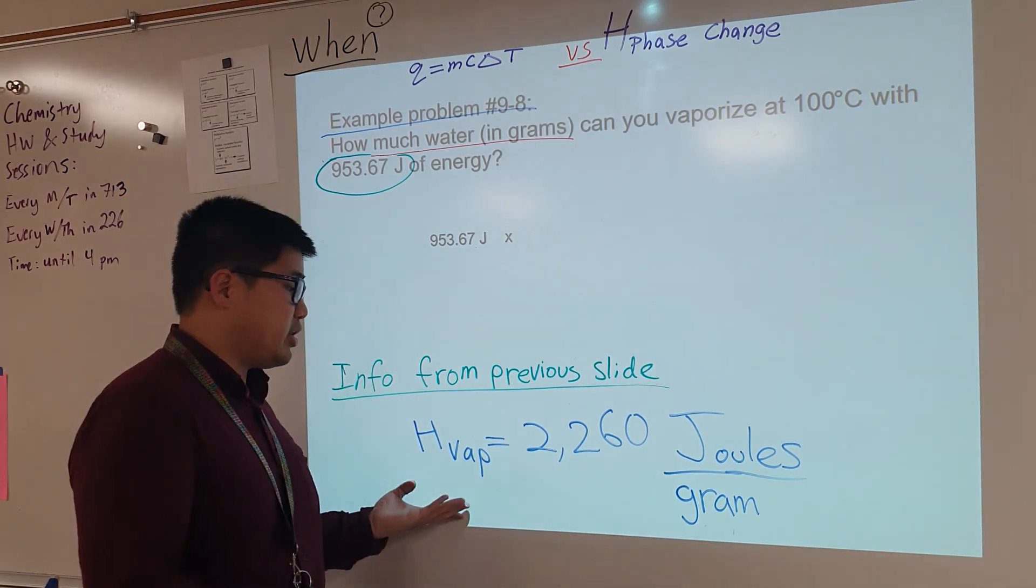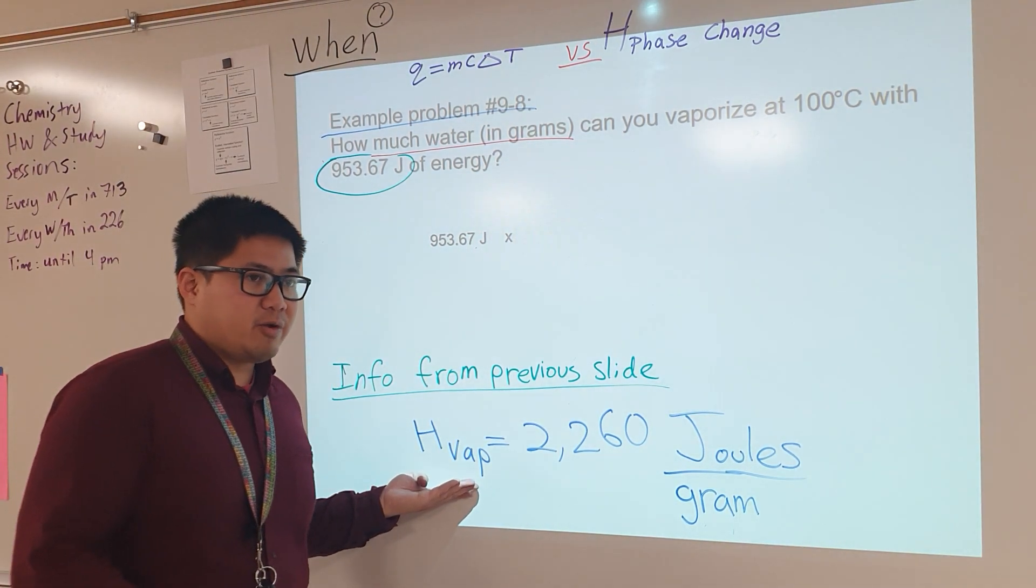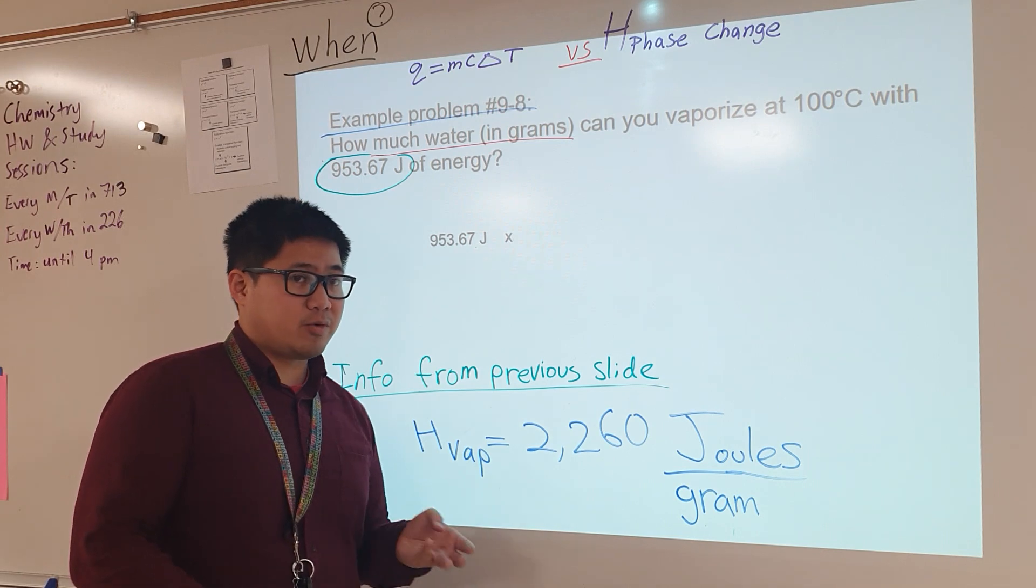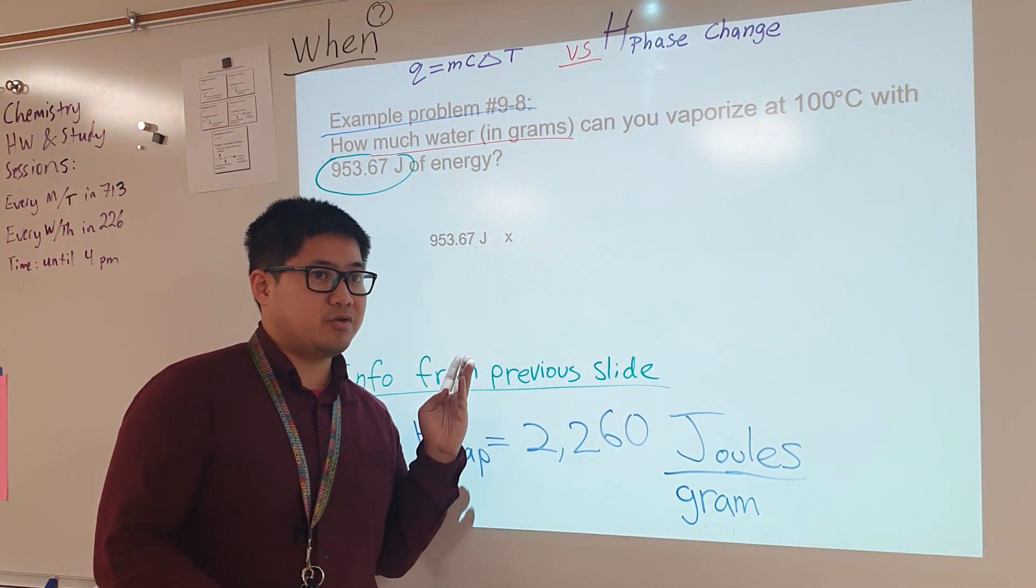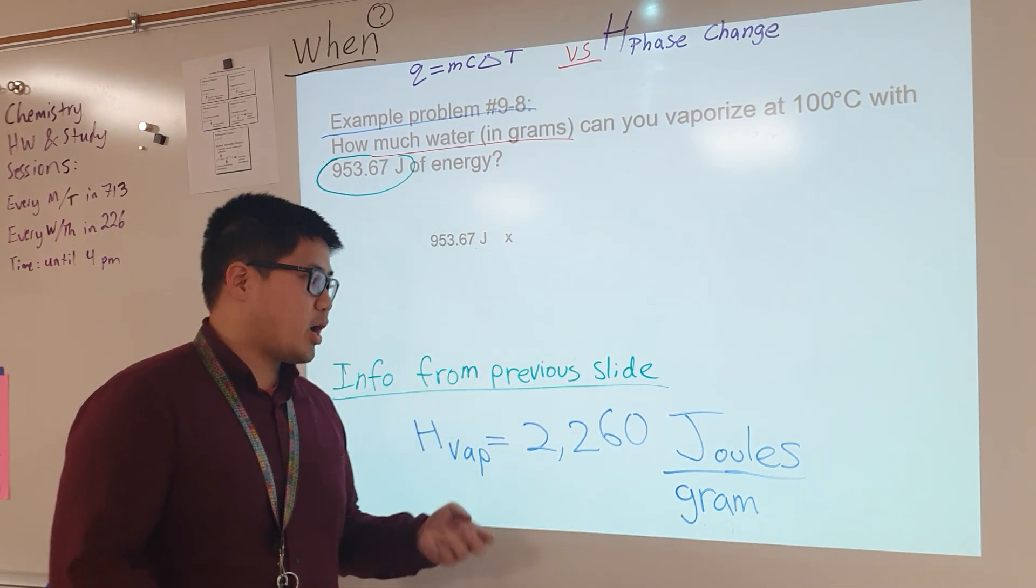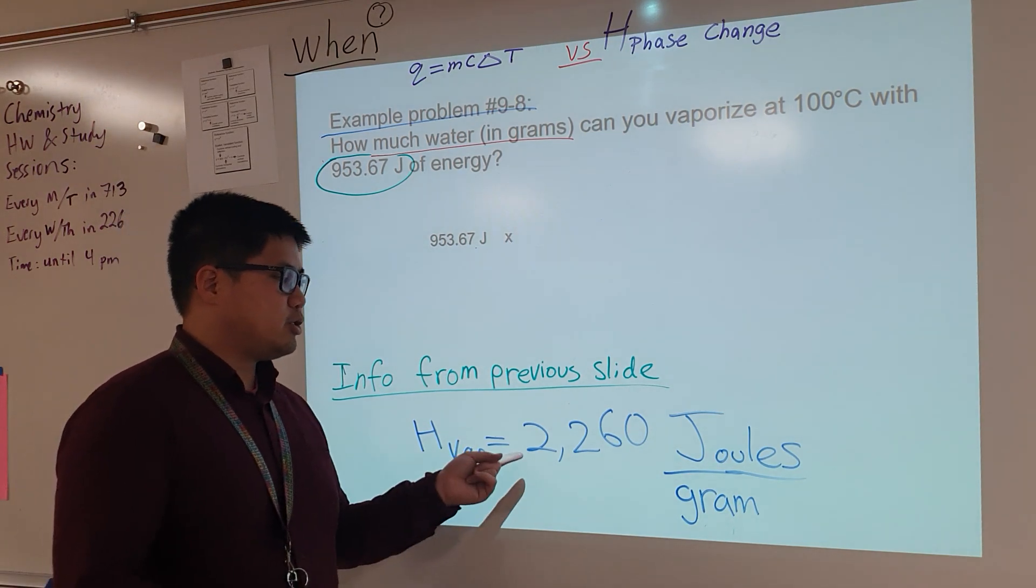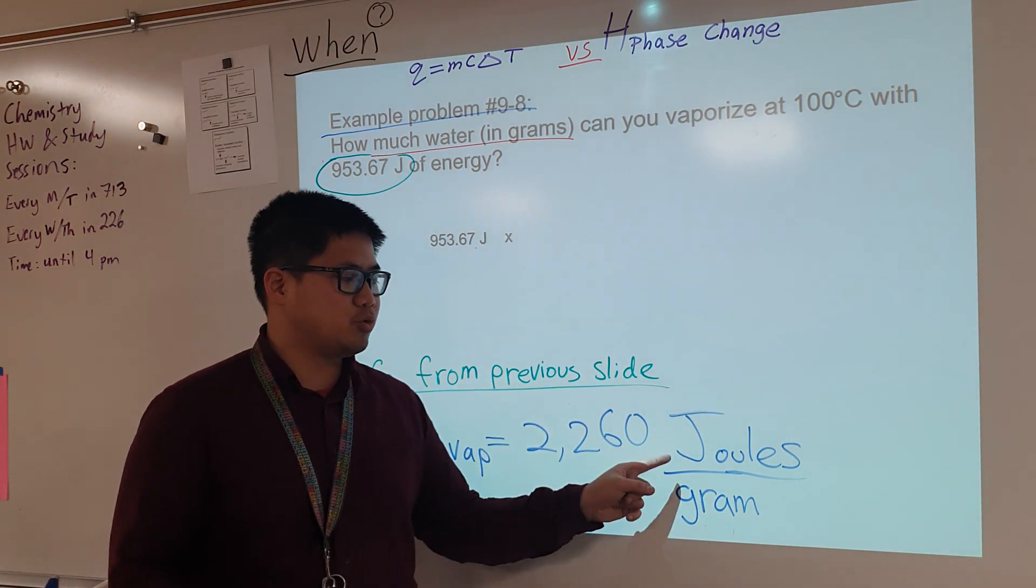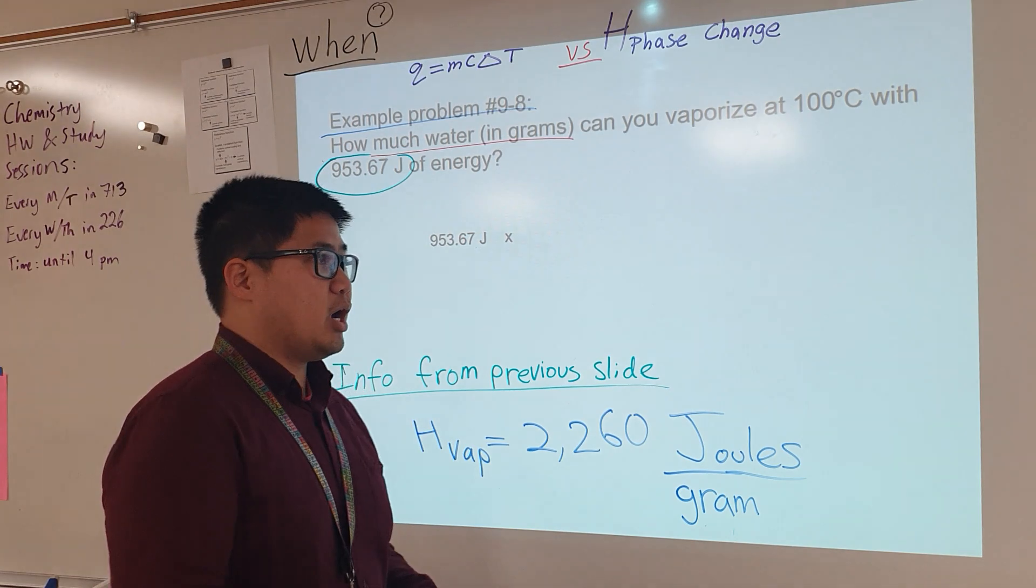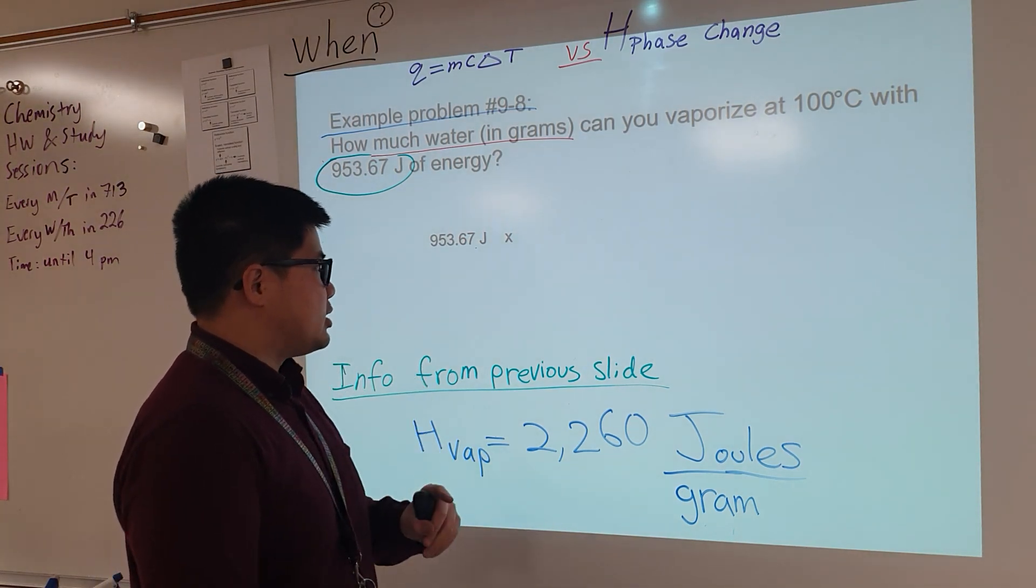From a previous slide, we had this information. The heat it requires to vaporize liquid water to transition into water vapor. Liquid water would absorb exactly 2260 joules for every one gram of water. And so the thing is,